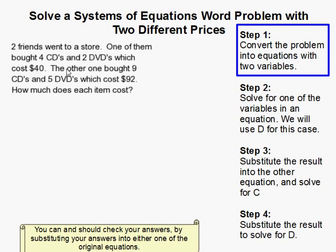Two friends went to a store. One of them bought 4 CDs and 2 DVDs, which cost $40. The other one bought 9 CDs and 5 DVDs, which cost $92. How much does each item cost?